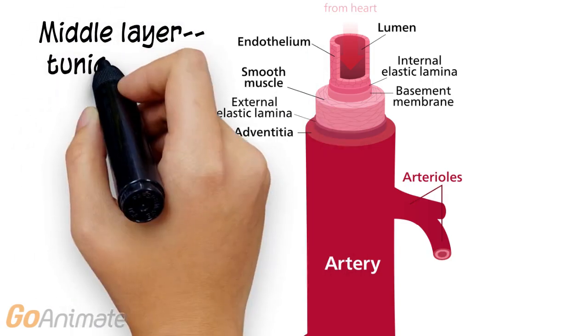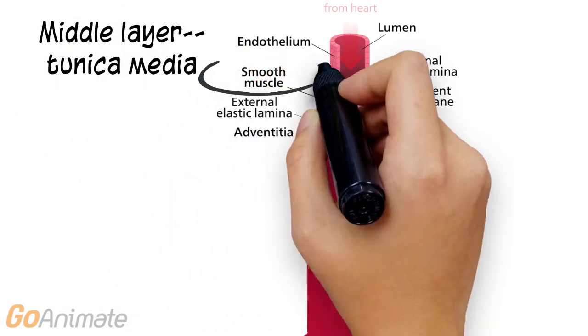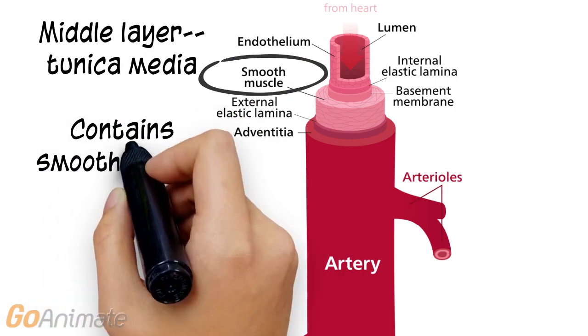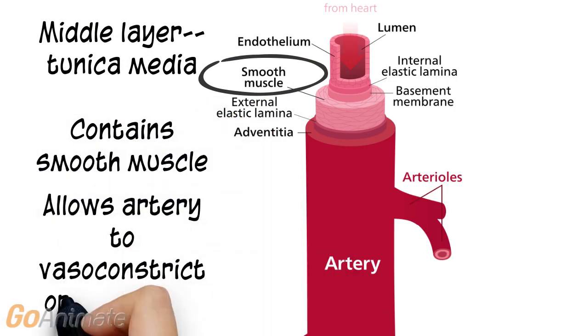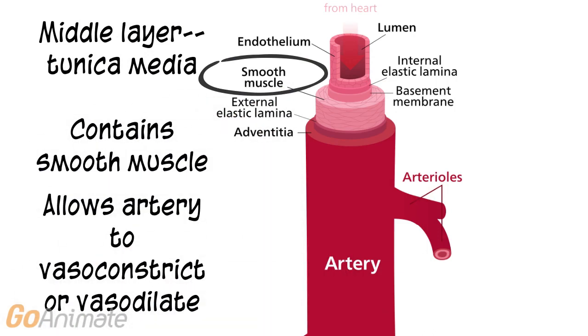The middle layer is called the tunica media. It consists of smooth muscle, which allows for vasoconstriction and vasodilation of the vessel.